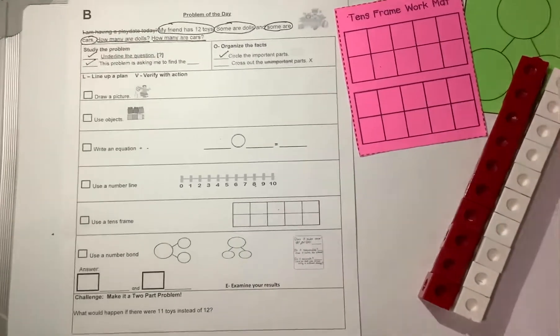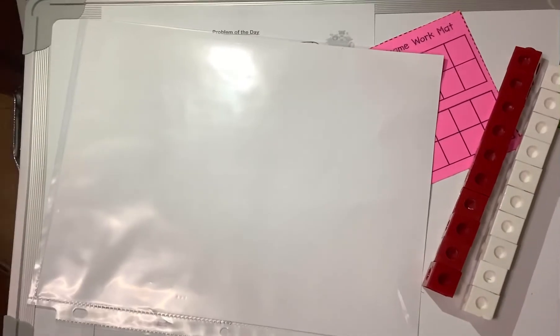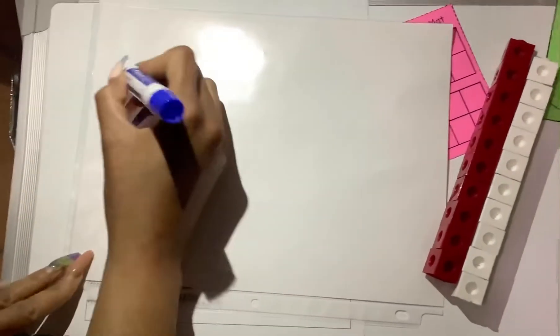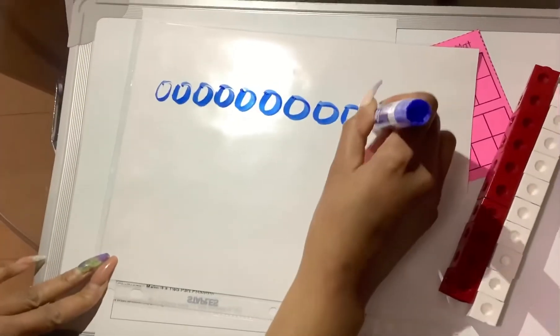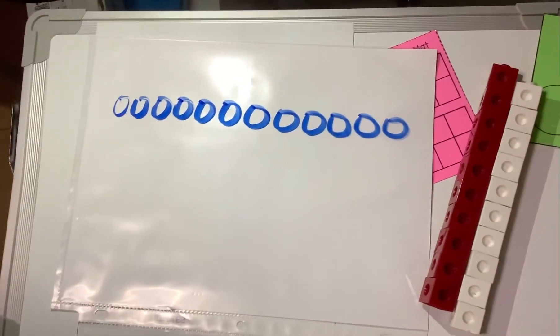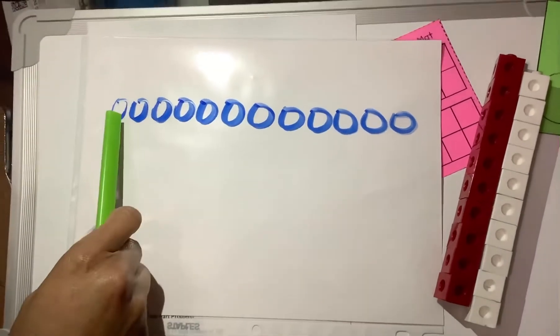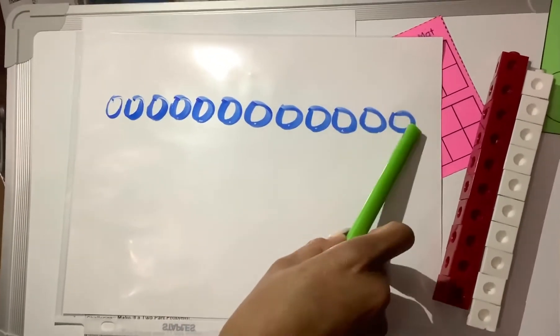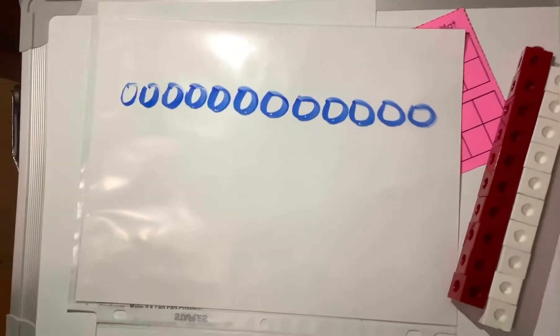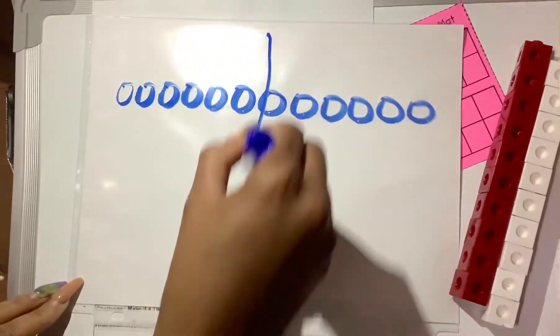So I am going to draw 12 toys. I am going to use circles. So I am going to draw 12 circles. 1, 2, 3, 4, 5, 6, 7, 8, 9, 10, 11, 12. Now this is a lot. So make sure that you are counting your drawings. So let's count it again: 1, 2, 3, 4, 5, 6, 7, 8, 9, 10, 11, 12. I need some to be dolls and some to be cars. So I am just going to draw a line anywhere going down. There's my line.